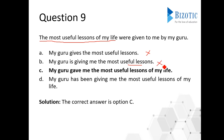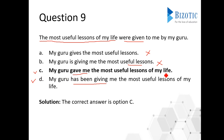That leaves option C or option D. The passive uses 'were given,' so in active voice it will not become 'has been given' — it changes to 'gave.' Option D uses 'has been given,' so it's wrong. Option C is correct: 'My guru gave me the most useful lessons of my life.' If we reverse that active sentence back to passive, we get exactly the original passive sentence, confirming option C is the answer.